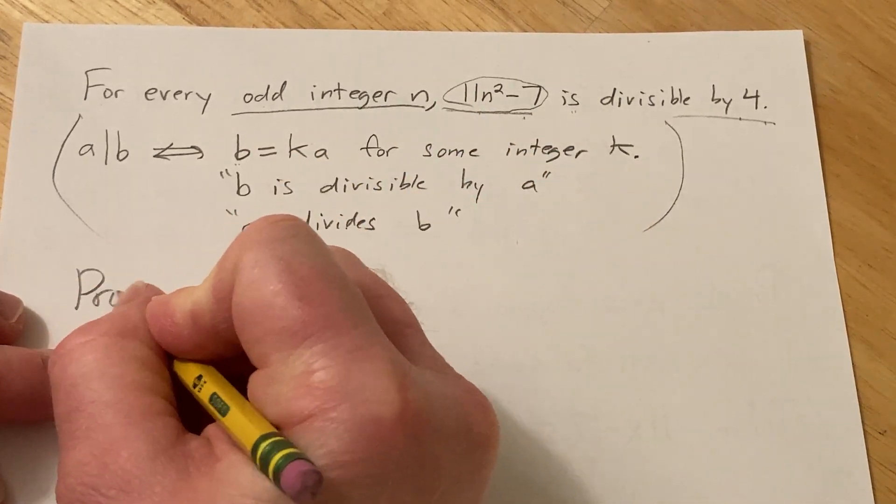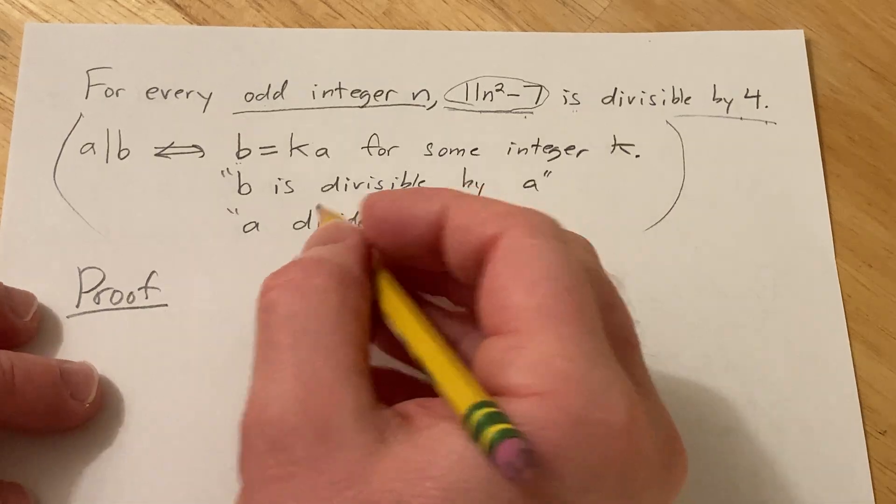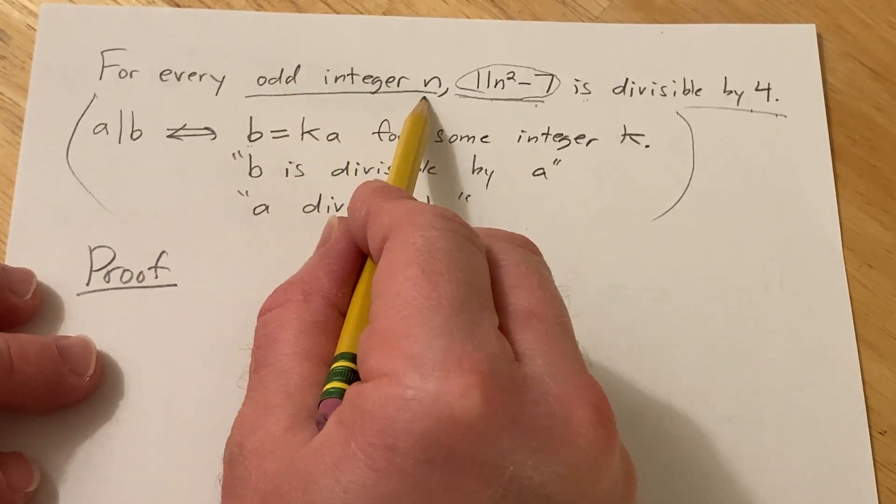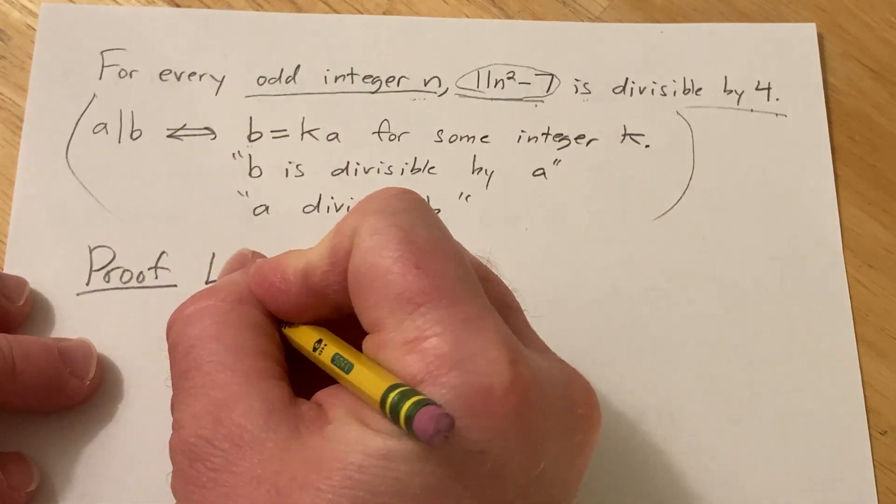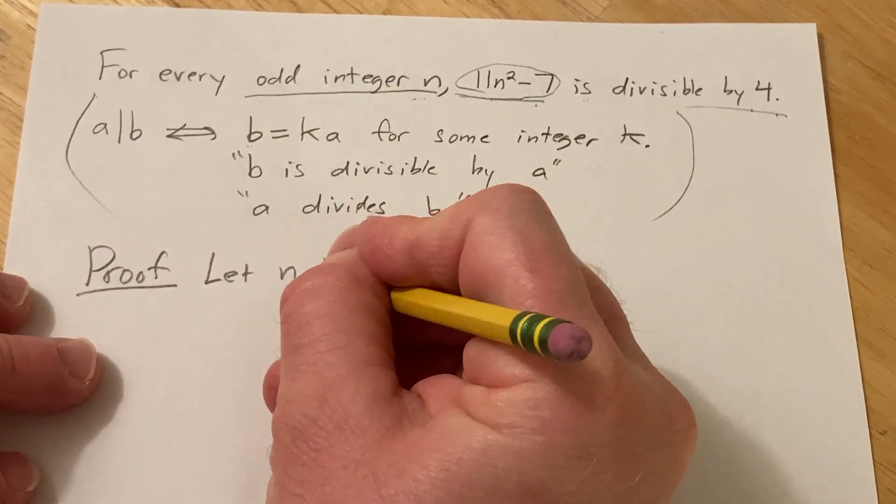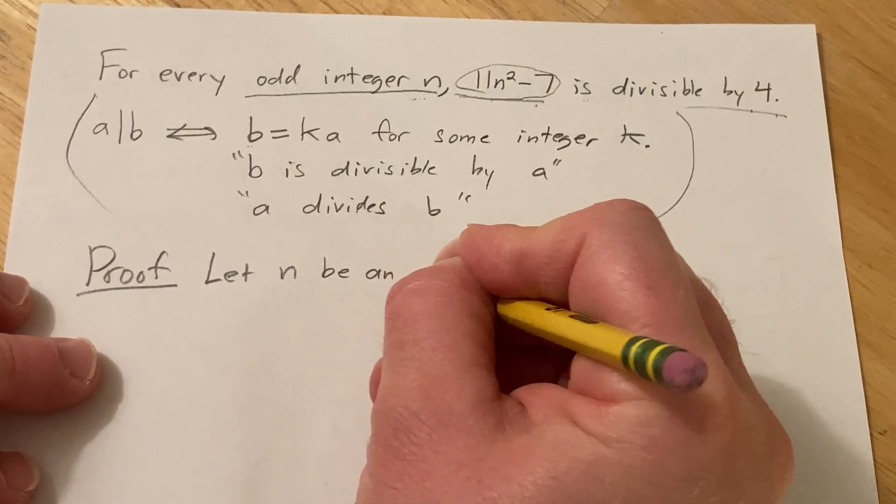Alright, so proof. So we'll start our proof by letting n be an odd integer because we have to show this is true for all odd integers.